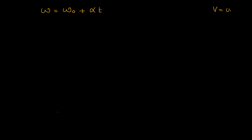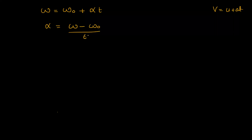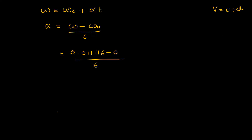Just as in linear motion v equals u plus at, for circular motion omega equals omega-naught plus alpha times t. So alpha equals omega minus omega-naught divided by t, which is 0.01116 minus 0 divided by 60 seconds, giving alpha equal to 0.000185 radians per second squared.